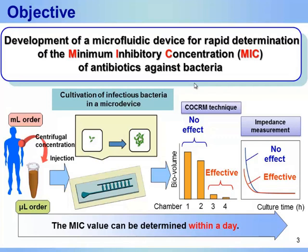This figure shows the steps in our test. First, the sample of milliliter order is obtained from the patient. Because the pathogenic bacteria are very few, the bacteria are concentrated by centrifugation. Then, the supernatant is removed and the remaining cell solution of 5 µL is injected to the device. We observed the growth of bacteria with two methods: COCRM technique and electrochemical impedance measurement, explained later. With this device and methods, the measurement can be completed without waiting for formation of colonies and determine the most effective antibiotics within a day.